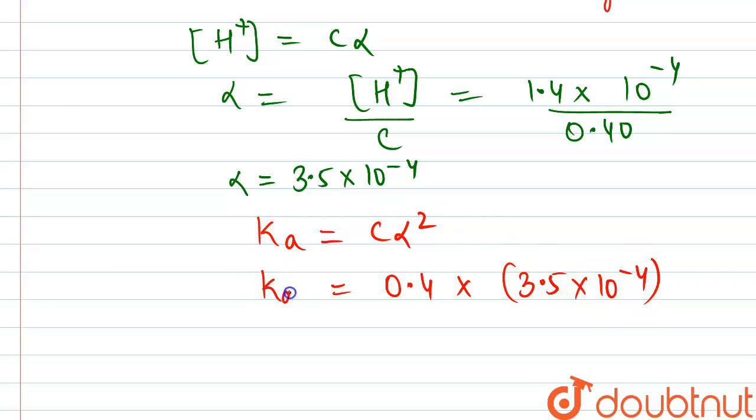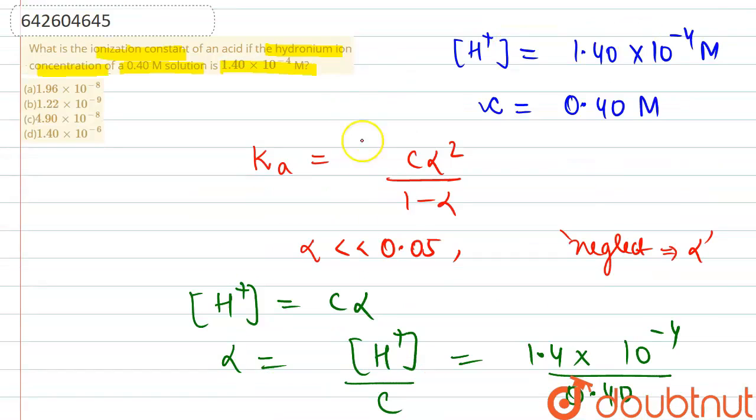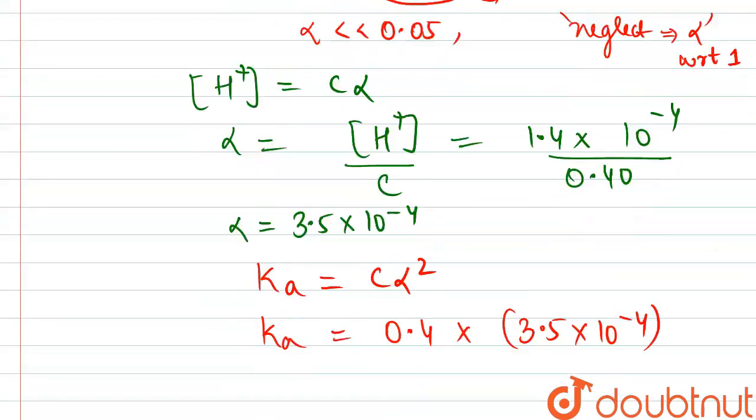How we have just obtained the expression: in this expression, neglect α with respect to 1. So this α we have neglected. Basically only the numerator will be left, so that is why this expression came.